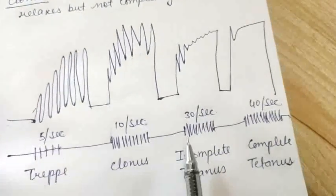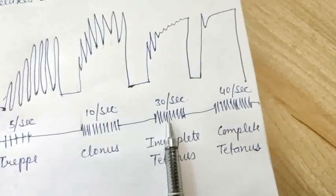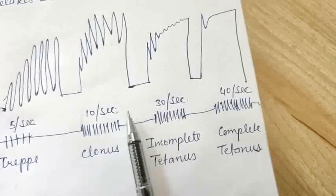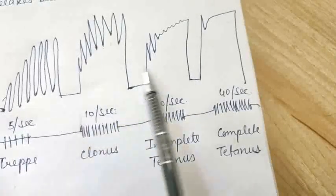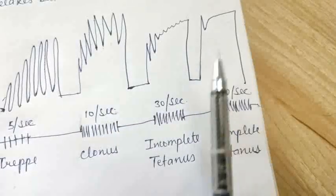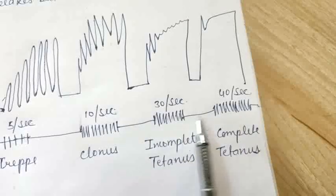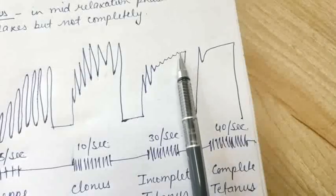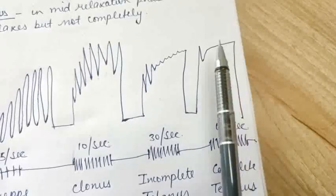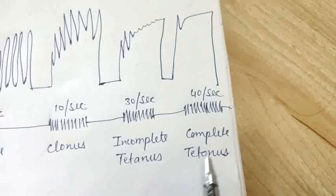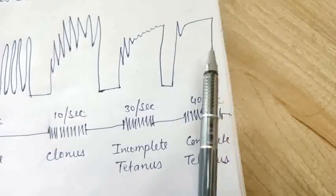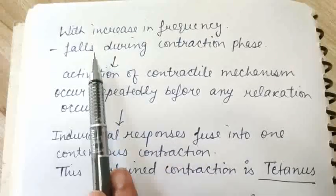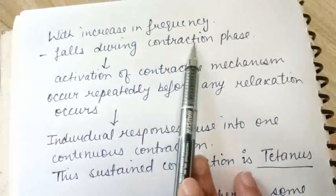As we increase frequency further, every successive contraction falls earlier than the previous one, which is why the response varies — relaxation keeps on reducing. If we increase further, the relaxation reduces even more, with only minor episodes of relaxation. At last, if we increase further, there is no relaxation. Tetanus is nothing but a sustained contraction without relaxation.